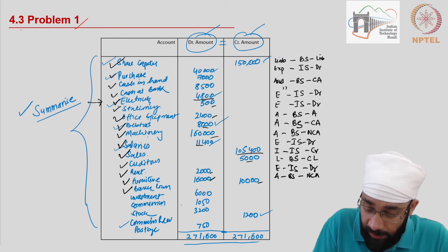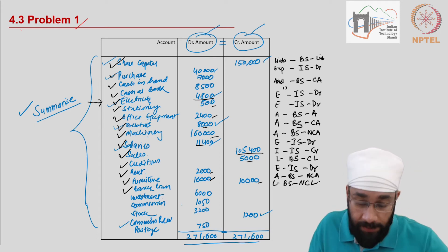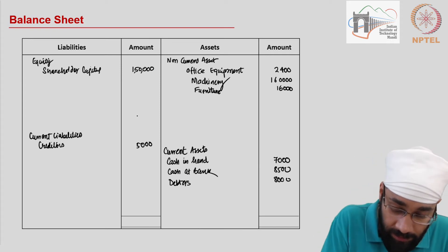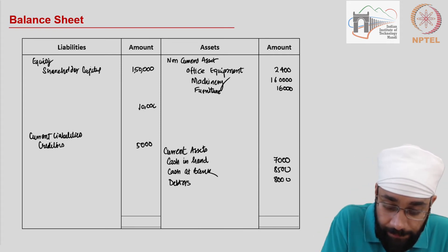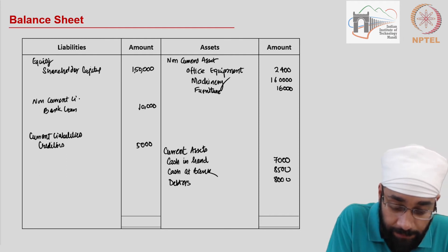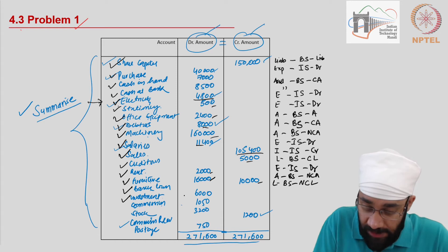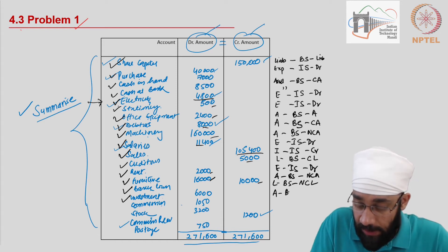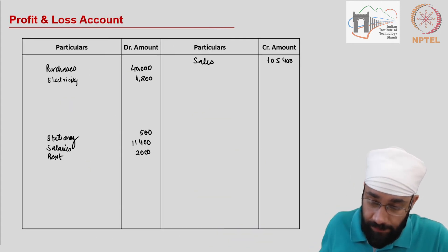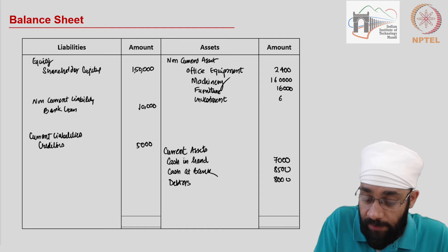Then you have a bank loan 10,000. This is a liability under the balance sheet non-current liabilities — it's a long-term liability. So bank loan is 10,000 under non-current liabilities. Next up is investment 6,000. This is an asset in the balance sheet under non-current assets — 6,000 investment. This is the investment made by the company in some other investment avenues.